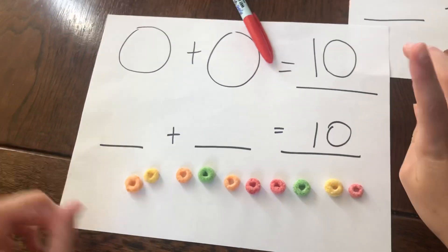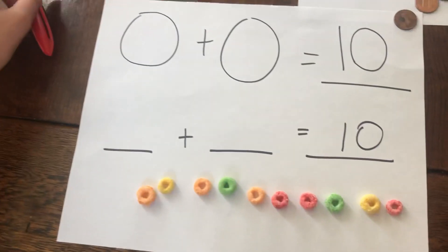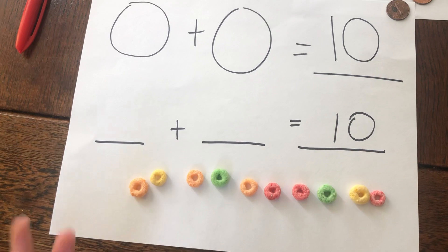And I know I have ten because ten is going to be our total. And I know one easy way to make ten is five plus five because it's a double fact.